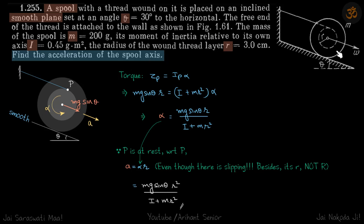We are given this spool that is on a smooth plane. On the inside radius of that spool, the thread is wound which is connected to this wall here. We need to find what is the acceleration of the spool axis. Here, because the thread is always at rest, this point will also be at rest.